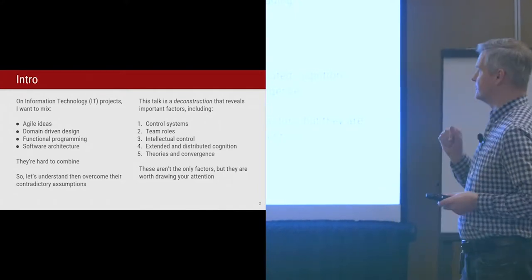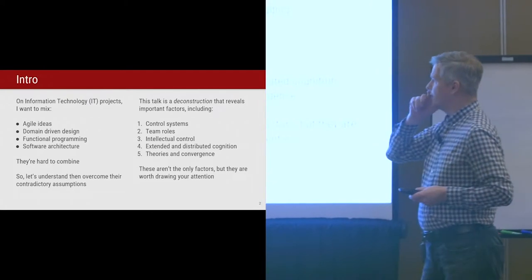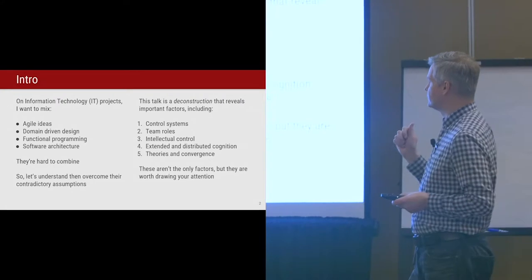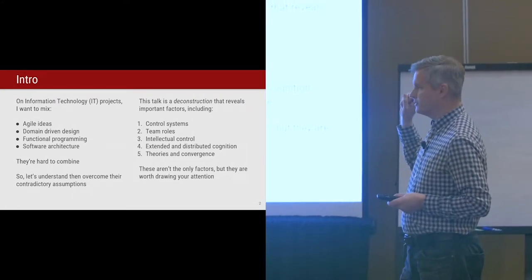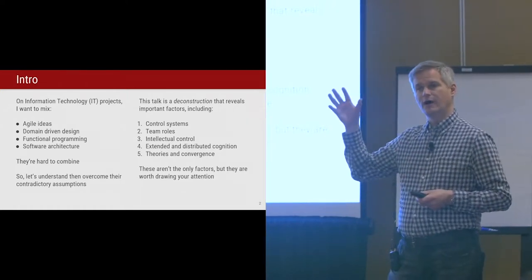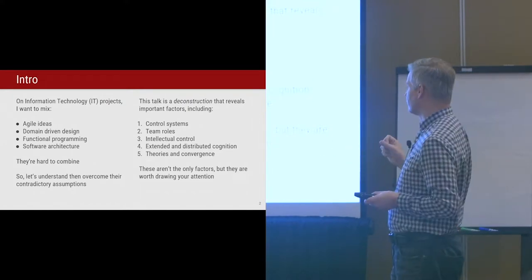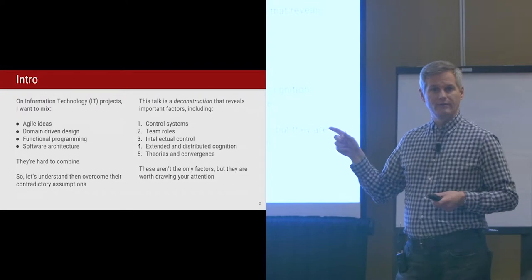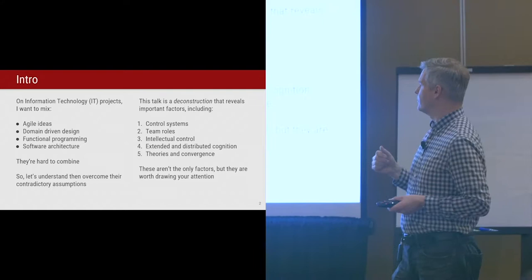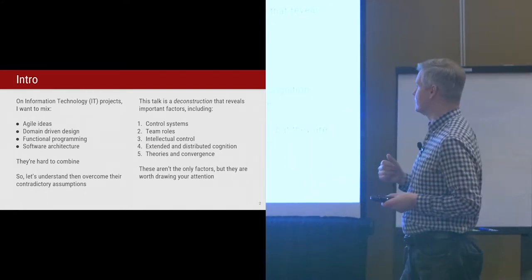So what we're going to chat about here today is these particular five topics. What I've been doing, and I think what many of you have been doing on IT systems, is mixing together ideas from the agile programming community, ideas from domain-driven design - by which we incorporate the concepts from the problem domain into the source code - ideas from functional programming, because most mainstream languages have been pulling in more functional programming ideas. And then, of course, here we are at Saturn, so software architecture, where this is a dear topic to us.